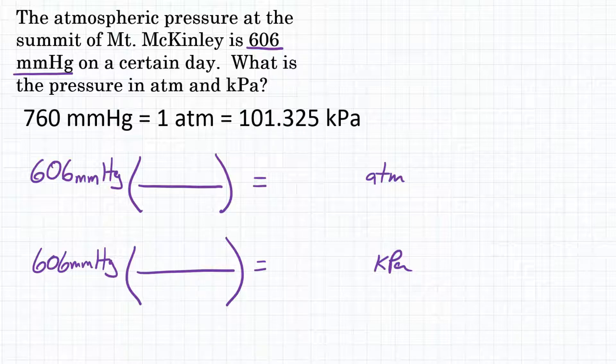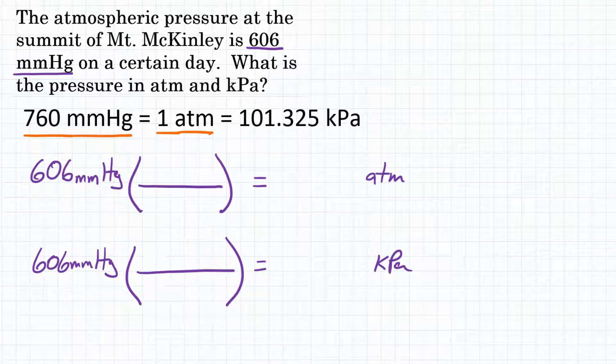So for our first conversion factor, we are going to go from millimeters of mercury to atmospheres, where 760 mmHg is equal to one atmosphere. So I am going to put 760 mmHg on the bottom of my conversion factor, and I will put one atmosphere on top, and we can now solve this problem.